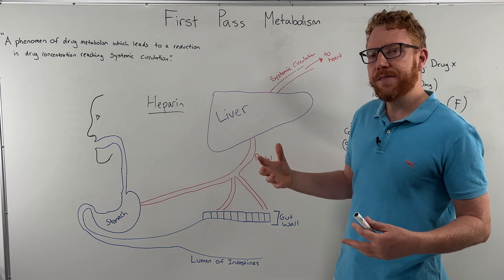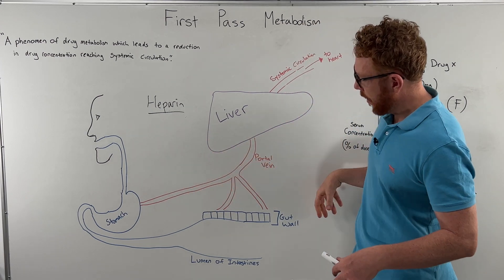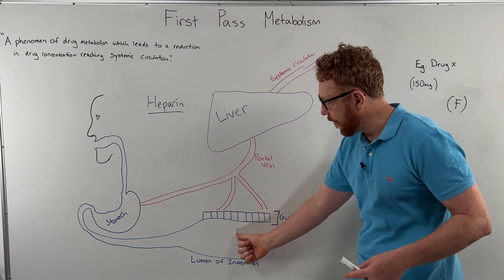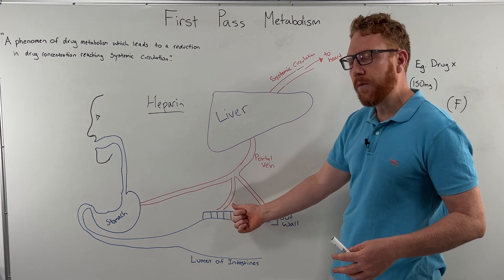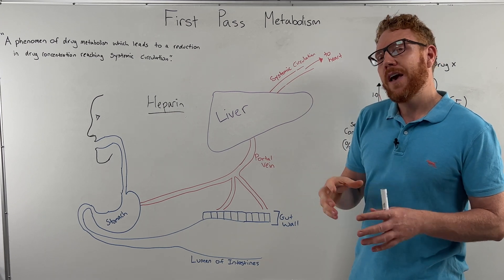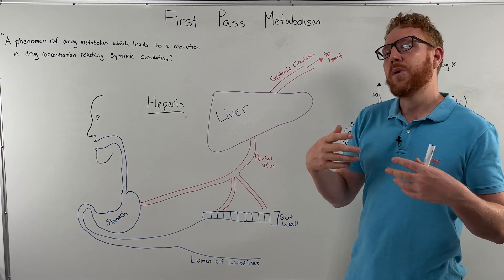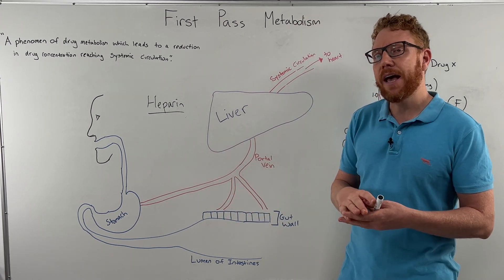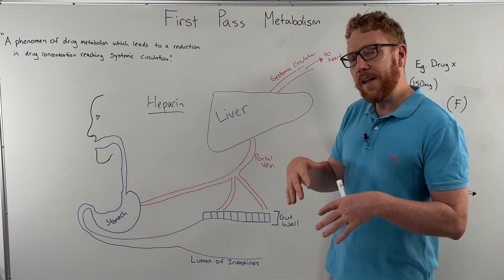Another important factor for absorption is how good the blood flow to the gut is. If there's poor blood flow, even if we get the drug across the gut wall, there's no blood to take it to the liver. So blood flow is also important. And that's why drugs are usually given with food, because during food you get better blood supply to the gut. All right, so that's absorption done.